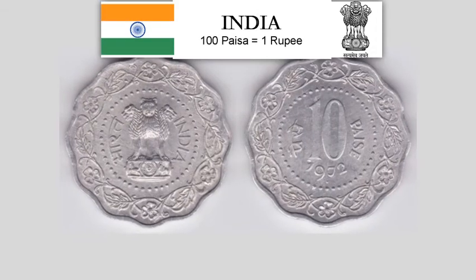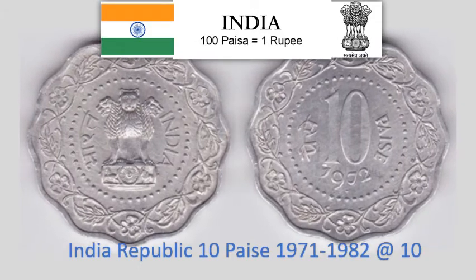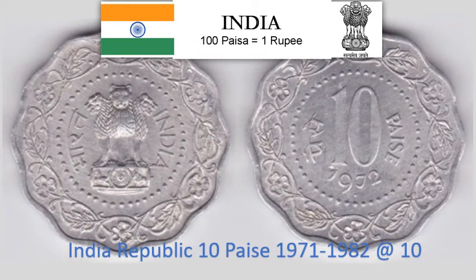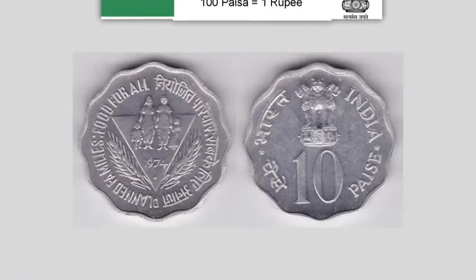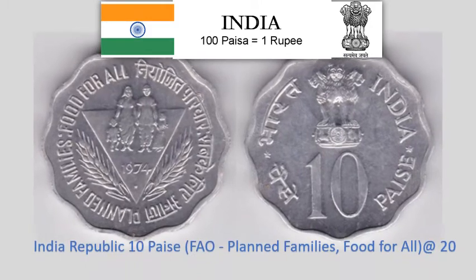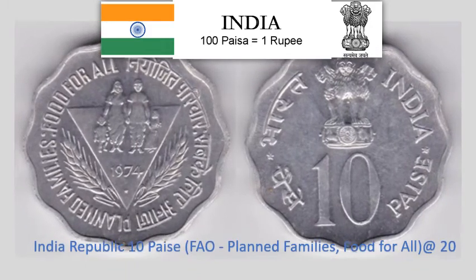India Republic 10 Paise 1971–1982. 2.9 gram Aluminium scalloped coin with 12 notches, 26 mm diameter. Krause Reference No. 27. Approximate market value Rs. 10.